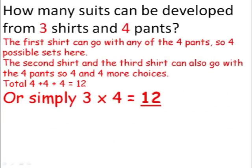Or simply we can say, because there are 3 shirts and 4 pants, the total number of choices is 3 times 4 equals 12. Okay?